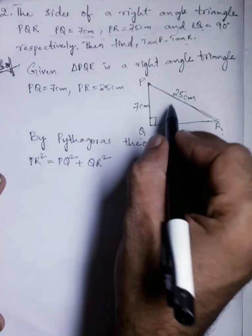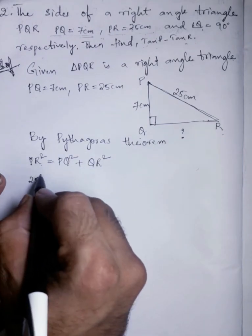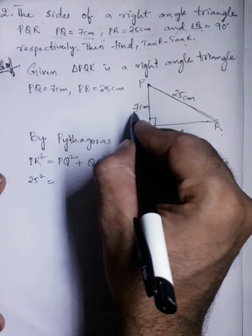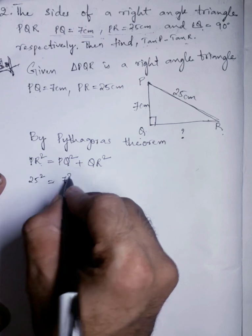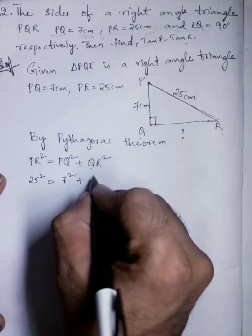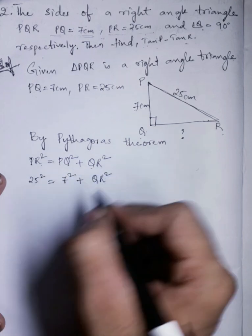Next, PR is 25, 25 square. PQ is 7 cm, so 7 square plus QR. We don't know QR, so QR square.